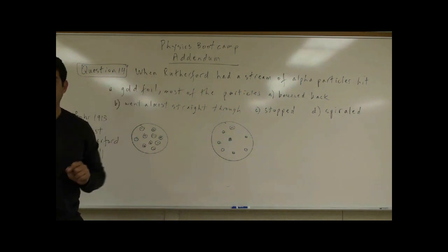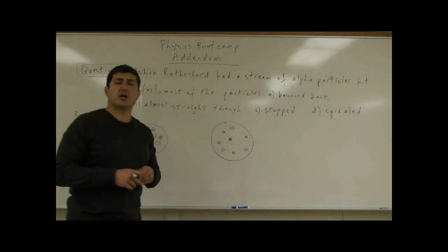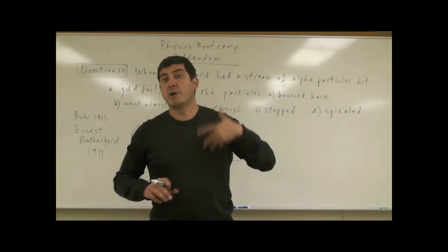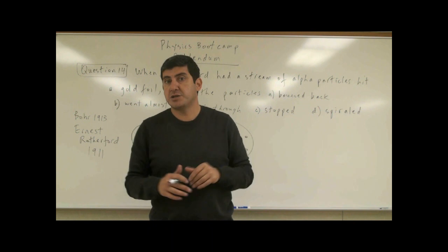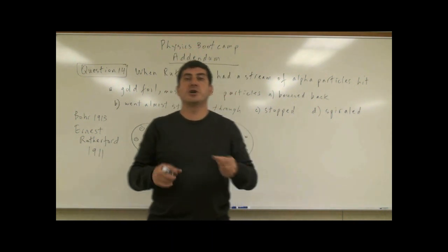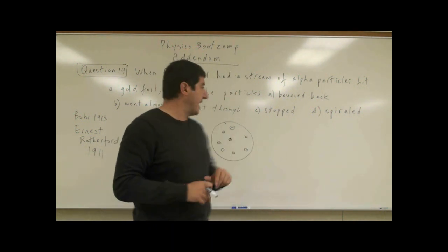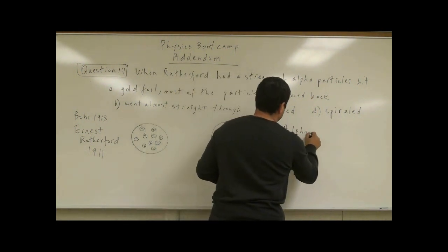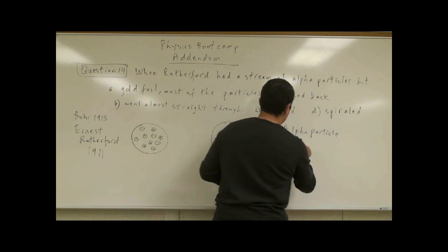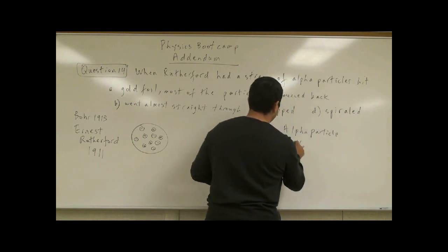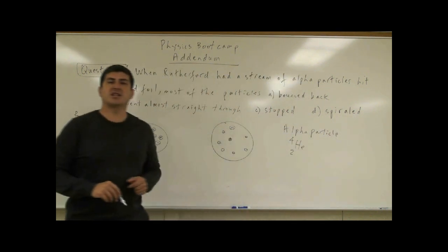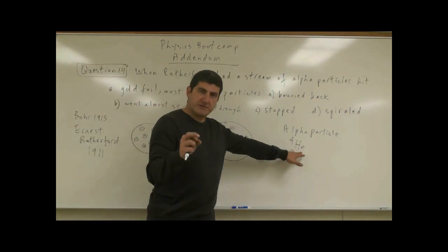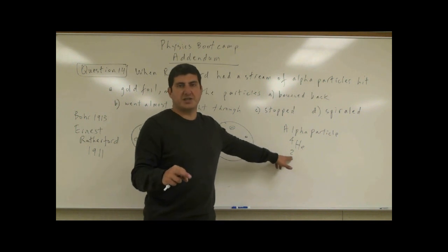Alpha particles, as we'll see later when we talk about radioactivity, are one form of radioactive decay. The alpha particle is basically a fancy word for the nucleus of the helium atom. We write it as He-4 with a charge of 2+. It has two protons and two neutrons — the only thing missing is the electrons.